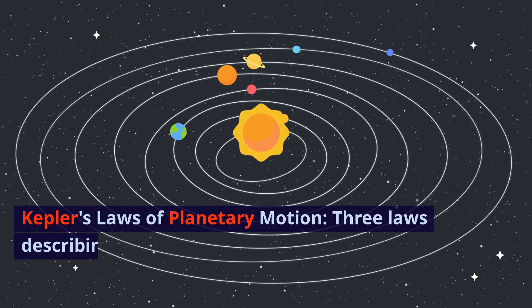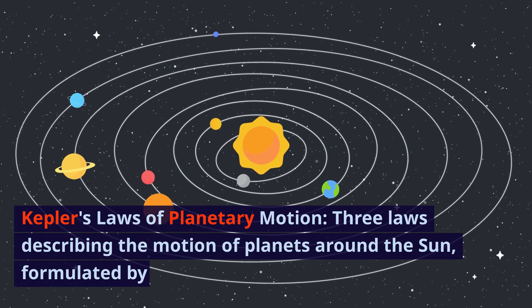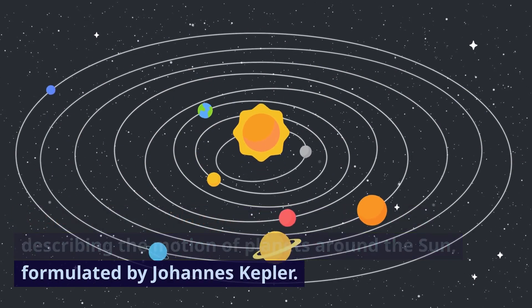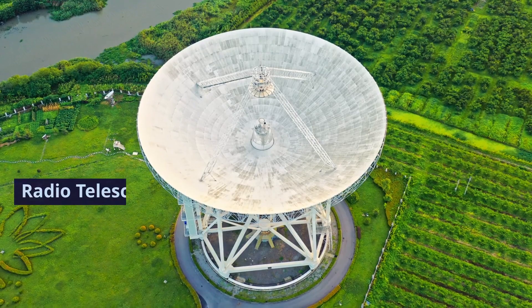Kepler's Laws of Planetary Motion. Three laws describing the motion of planets around the Sun, formulated by Johannes Kepler.